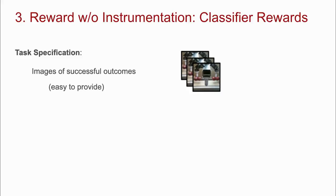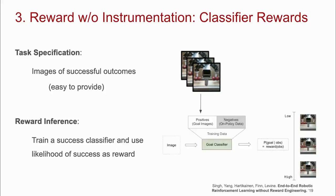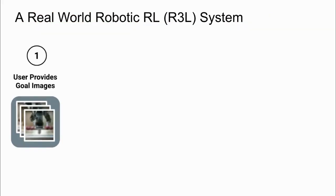Finally, although obtaining rewards without instrumentation is difficult, it's often possible to specify the task with images of success. Given these images, we can train a success classifier and use the probability outputted by this classifier as reward. The classifier treats the success images as positives and all other observations collected by the policy as negatives. This system allows the agent to assign itself reward from its onboard sensors without requiring human intervention.